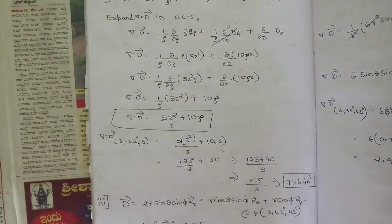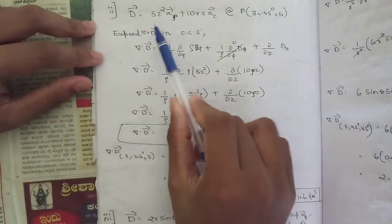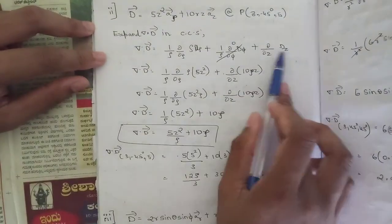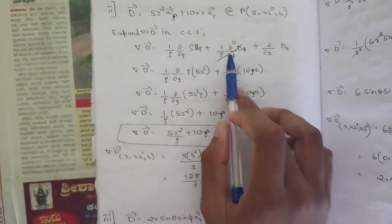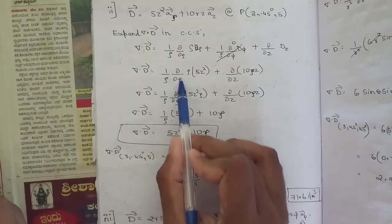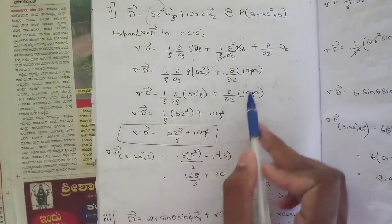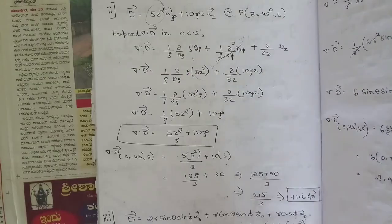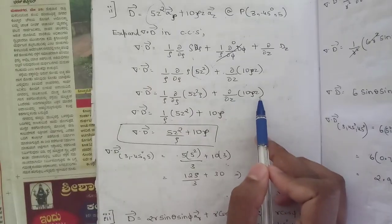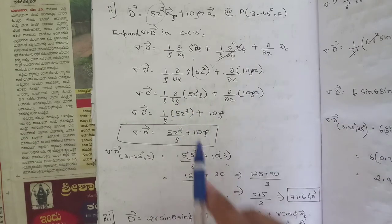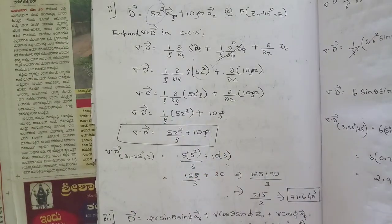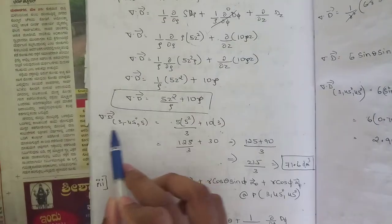The second sub-question has D = φz² aρ + 10ρz az at point P = (3, -45°, 5), which is in the cylindrical coordinate system. Expanding del·D in cylindrical coordinates: (1/ρ)∂/∂ρ(ρDρ) + (1/ρ)∂/∂φ(Dφ) + ∂/∂z(Dz). Since there is no Dφ term, that term equals zero. So del·D = (1/ρ)∂/∂ρ(ρ·φz²) + ∂/∂z(10ρz).